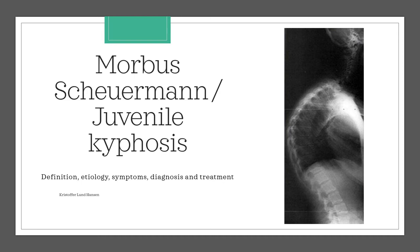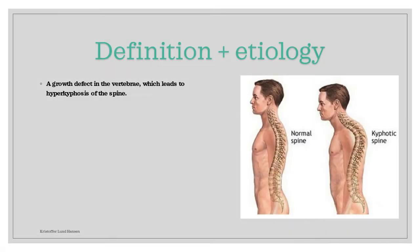Hello everyone! This video will be about Morbus Scheuermann, which is also known as juvenile kyphosis. So what is Scheuermann's disease? To sum it up shortly, it is a growth-related disorder that affects the spine. Over time, this growth defect will lead to hyperkyphosis of the spine.